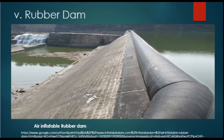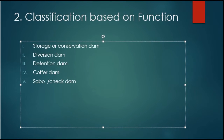The fifth type is the rubber dam. A rubber dam is used to retain water at small heights. Compressed air is used to inflate the dam structure, and it is released whenever the dam is not needed.